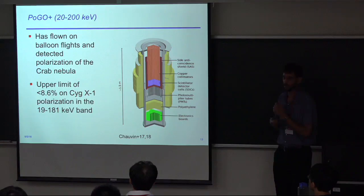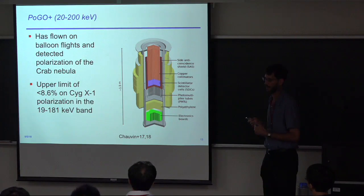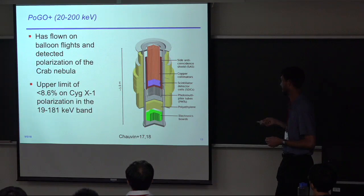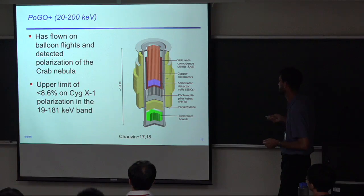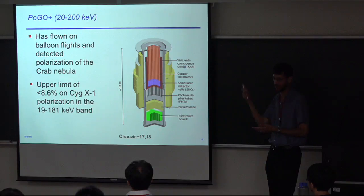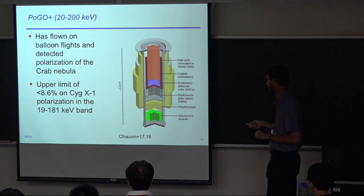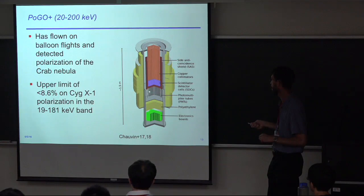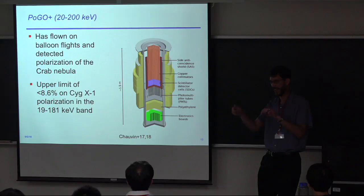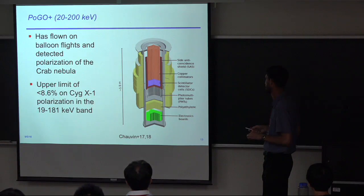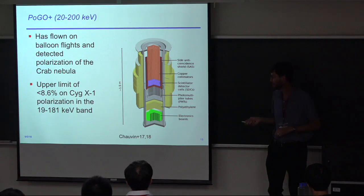Moving down in energy to 20 to 200 keV: PoGO Plus is another balloon instrument that has done polarization measurements. It measured polarization of the Crab and got an upper limit on Cygnus X-1 of 8.6%, which is quite low and pretty interesting. The instrument uses scintillator detectors arranged in columns read out by photomultiplier tubes. When you have multiple interactions in the scintillators, you can measure scatters between them and determine the polarization of the incoming gamma ray. This has been quite a successful mission.